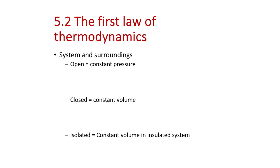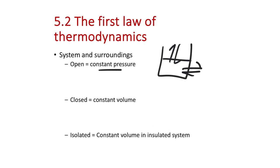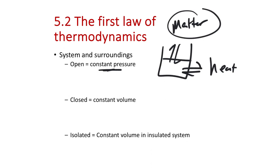Let's talk about different types of systems. An open system is one at constant pressure — literally just a beaker open to the atmosphere. The beaker can exchange matter with the surroundings and exchange heat with the surroundings. If you create a gas, it just releases — it doesn't cause the container to increase pressure. We say constant pressure because if we create or consume a gas, there's no pressure change. The open system can exchange matter and heat, and this is the most common chemical system.